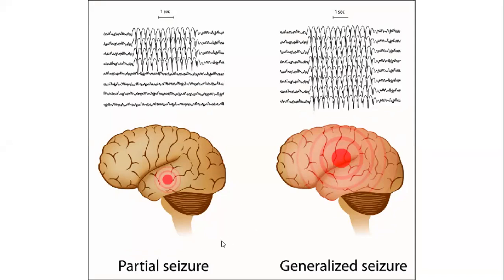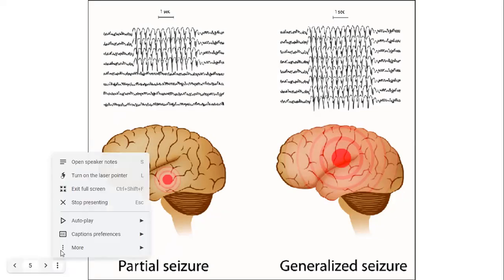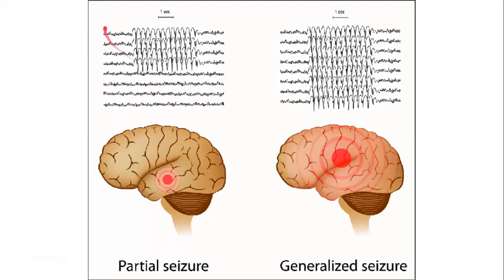We are going to talk about seizures like an earthquake — sometimes it is centralized, and other times it spreads on a massive level across the whole area. Same is the case with seizures. Sometimes the origin of a seizure is located at one particular area of the brain only, which is called a partial seizure. On the EEG waves shown, not all waves are showing activity — only a few, with the rest exhibiting normal functions.